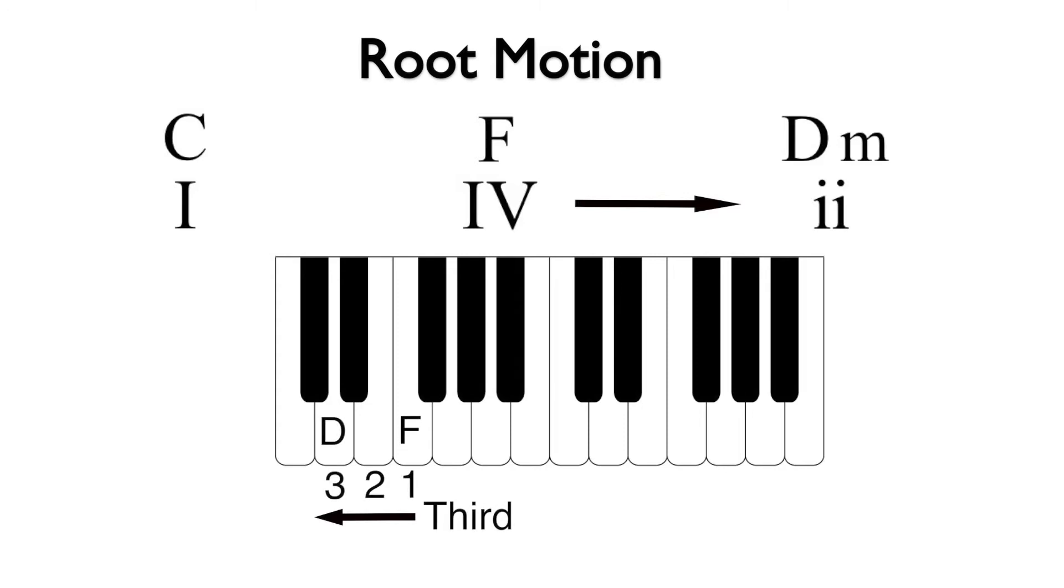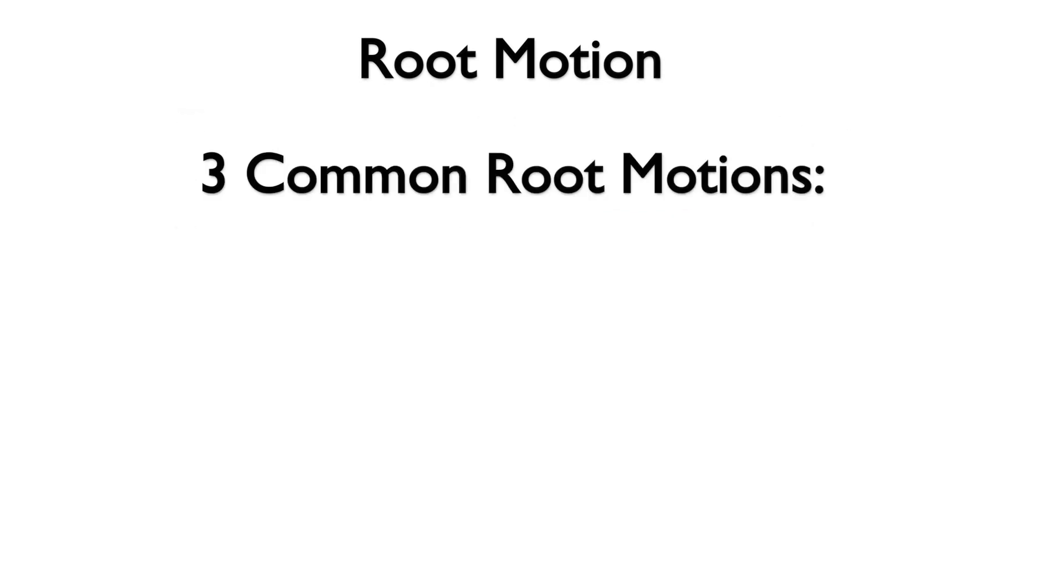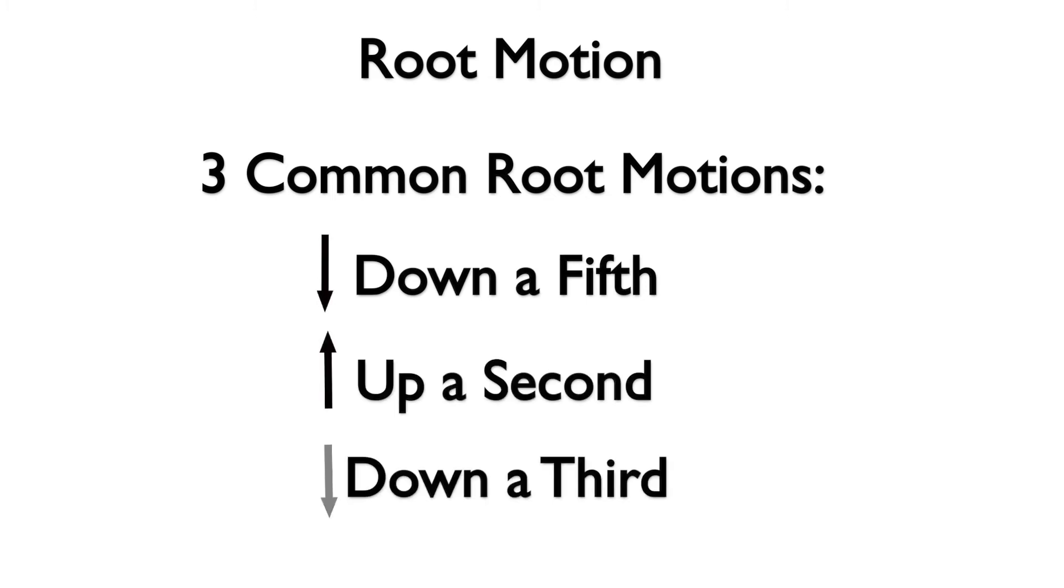In music of the common practice period and standard jazz, there are three common root motions: down a fifth, up a second, and down a third. Think of each of these as basic intervals, so it doesn't matter if the interval is major, minor, perfect, diminished, or augmented.